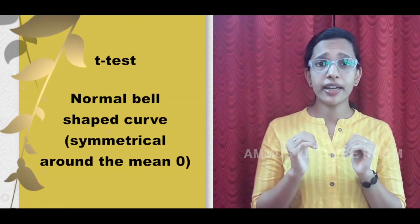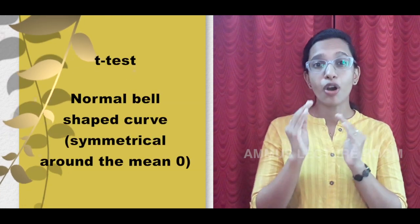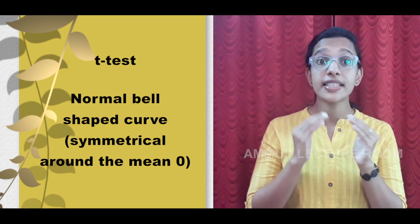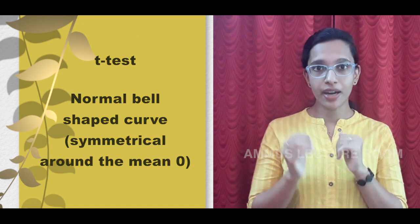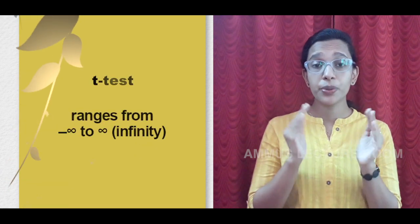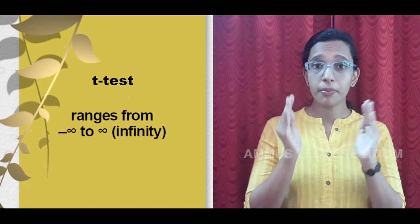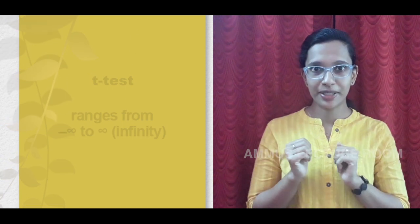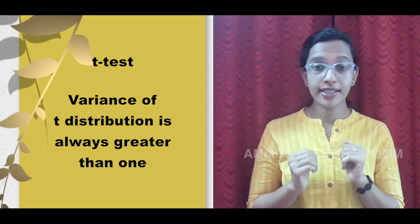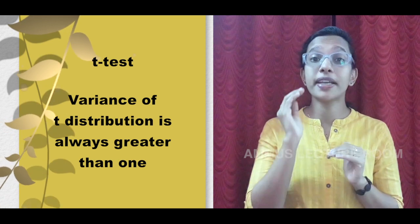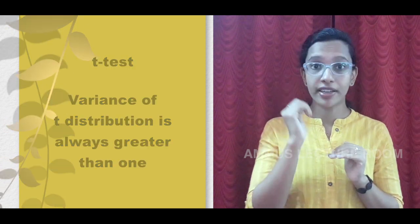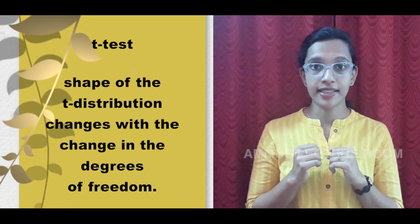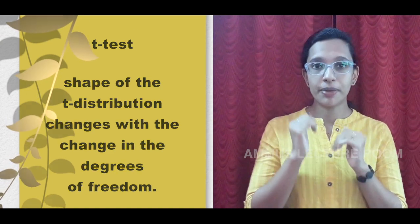T-distribution is a normal bell-shaped curve that is symmetrical around the mean. The value range is minus infinity to infinity. The t-distribution variance is greater than 1. The degree of freedom change will change the t-distribution shape.